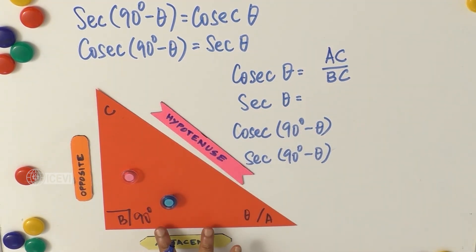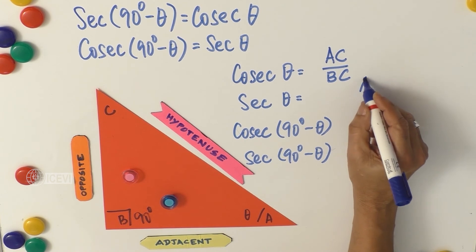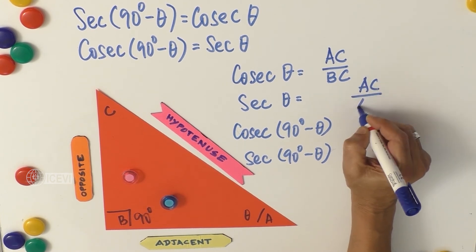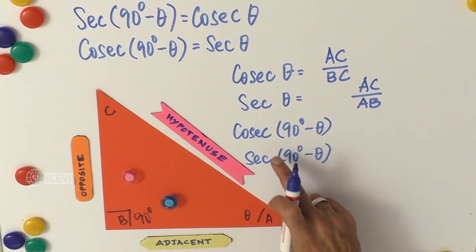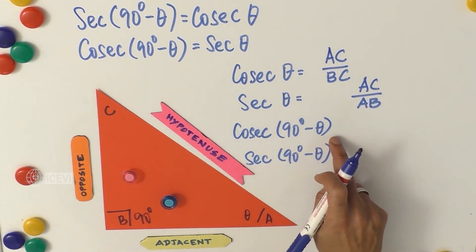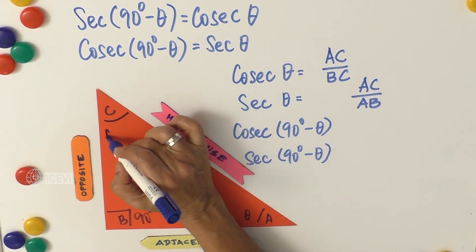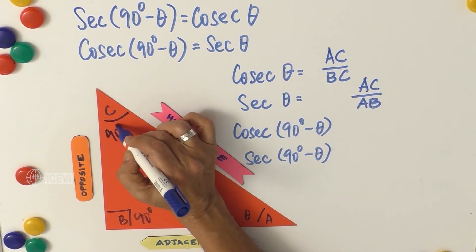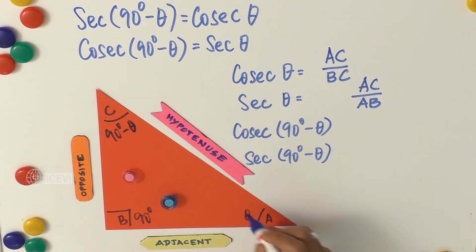What is secant theta? Secant theta is hypotenuse divided by the adjacent — that is AC divided by AB. Now, what is cosecant(90° minus theta)? If we take angle A as theta, then angle C becomes 90° minus theta, because A and C are acute angles and A plus C equals 90°.